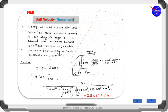In this problem, we are given a strip of metal, which you can see in the figure. The strip of metal is 1.2 centimeters wide and 1.5 × 10⁻³ centimeters thick. This strip carries a current of 0.50 amperes along its length.